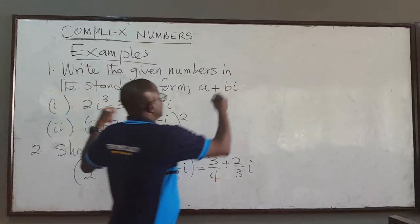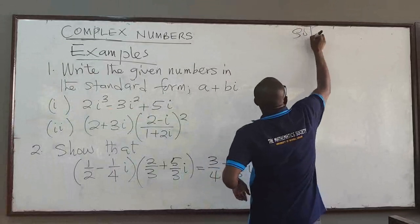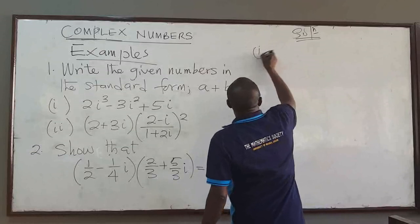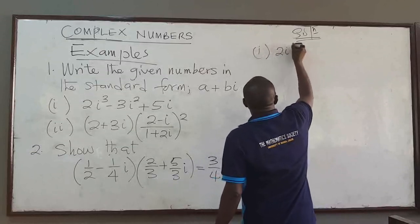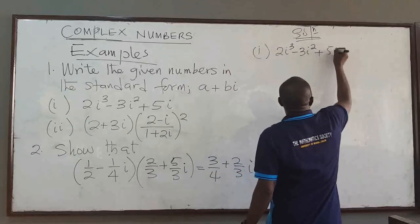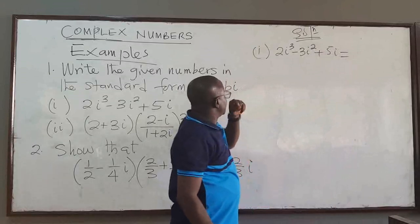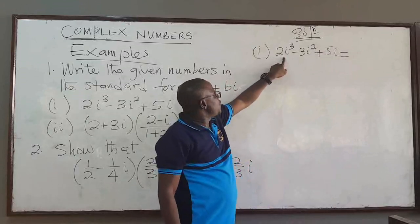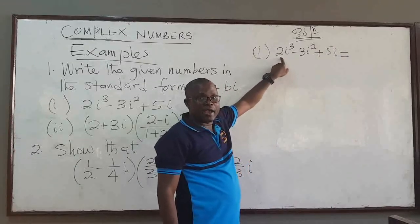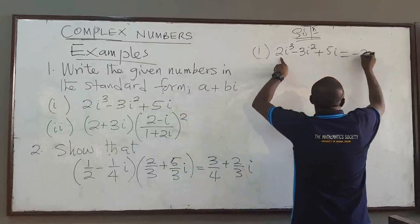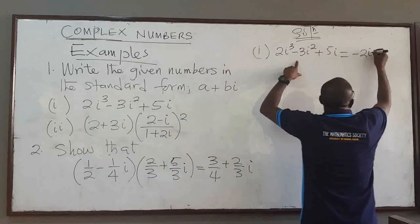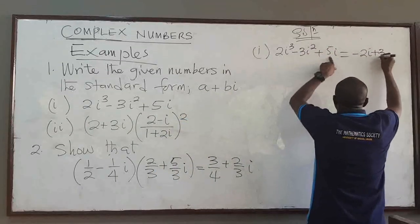Now let's start with the solution. I have 2i cubed minus 3i squared plus 5i. Now i cubed is the same as i squared times i, but i squared is negative 1, so basically this is negative 2i. So this is minus 2i. Then i squared is negative 1, and there's a negative here, so that becomes plus 3. And this is plus 5i.